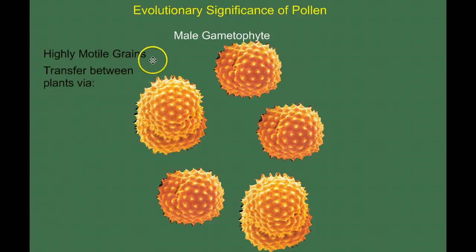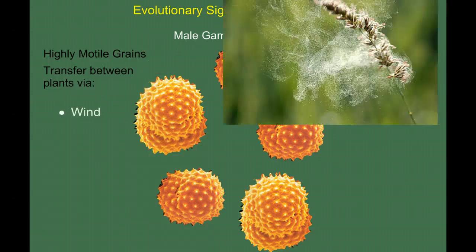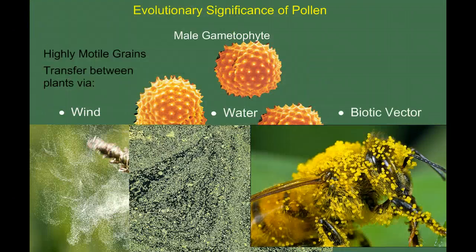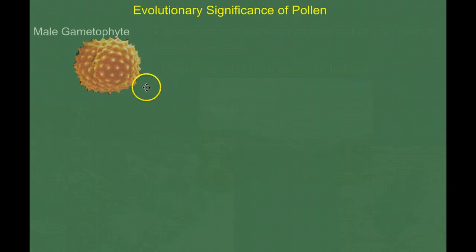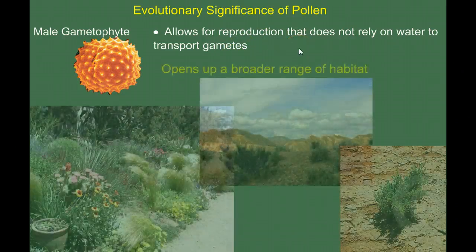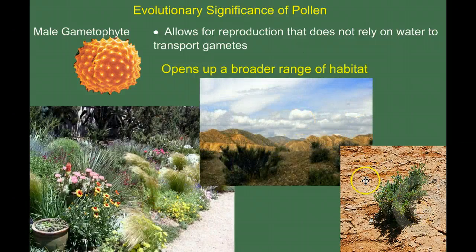These highly mobile pollen grains can transfer between plants via wind — we have wind-borne pollen — via water, and via biotic vectors, which is a fancy way of saying pollinators, like a bee covered in pollen that transfers pollen grains as it goes from one flower to the next. The evolutionary significance is that pollen allows for reproduction that does not rely on water to transport the gametes. Mosses and ferns required water for sperm to reach the egg and were thus limited in habitat. With pollen, plants were able to spread into a much broader range of habitat, including arid environments.